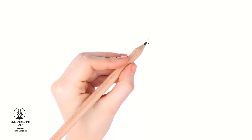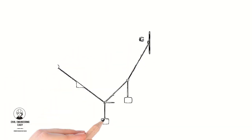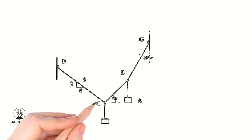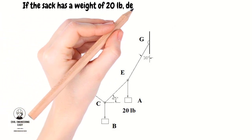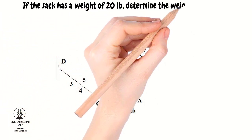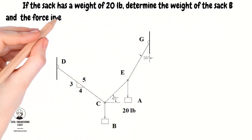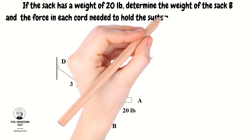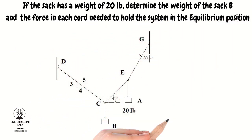Hi, welcome back to my YouTube channel Civil Engineering Easy. Today I am going to solve a numerical example related to engineering mechanics. It is given that if the sac has a weight of 20 pounds, determine the weight of sac B and the force in each cord needed to hold the system in the equilibrium position as shown.